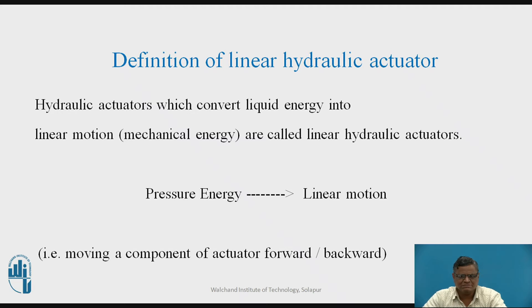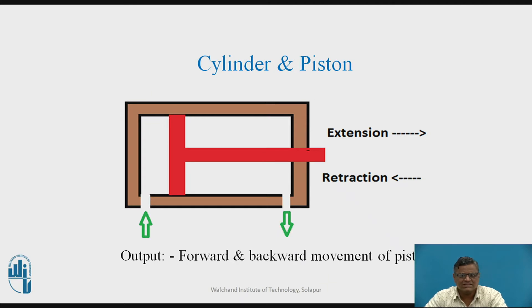These are cylinder and pistons — forward stroke and backward stroke take place for the piston. We supply pressurized oil and the unpressurized oil comes outside the cylinder. The cylinder has two ports: one port on the left hand side and one port on the right hand side, through which oil can enter into or exit the cylinder.